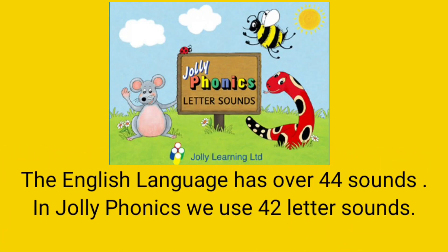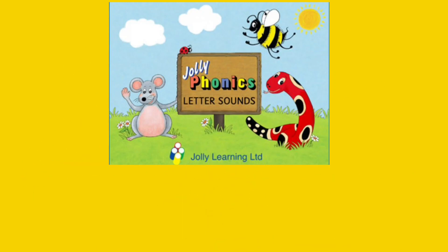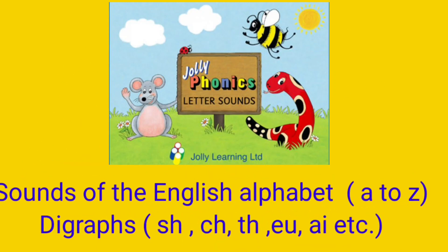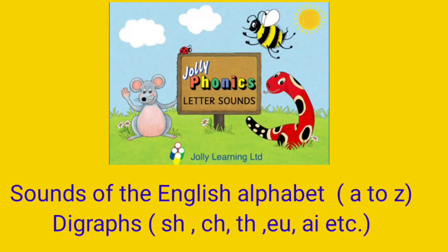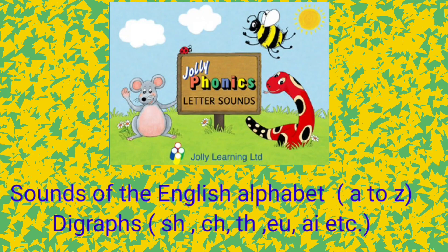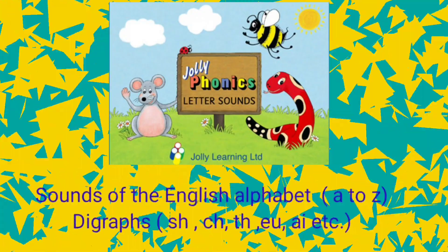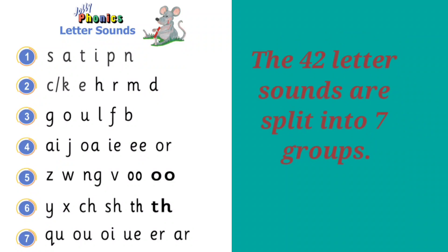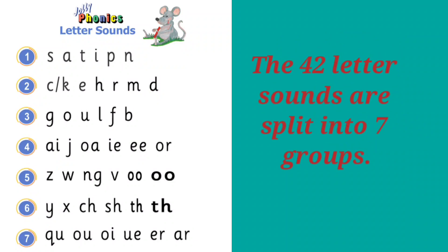The English language has over 44 sounds, and in Jolly Phonics we cover 42 letter sounds, which includes the letters of the English alphabet from A to Z and digraphs. Digraphs are when two letters combine together to make one single sound. These letter sounds are split into seven groups in Jolly Phonics.